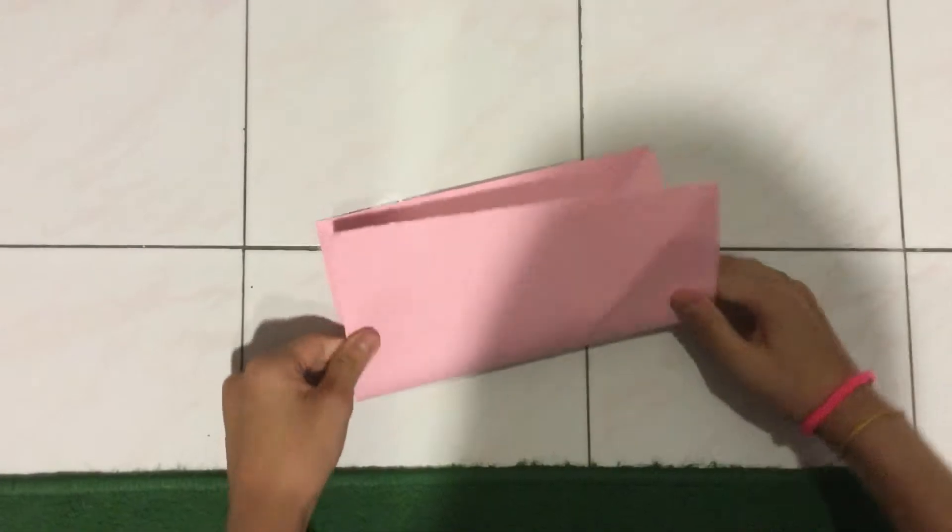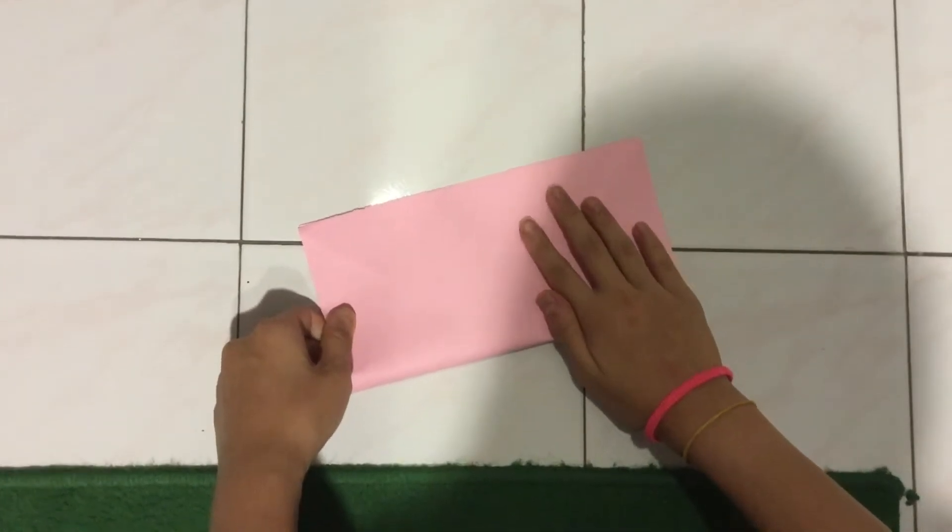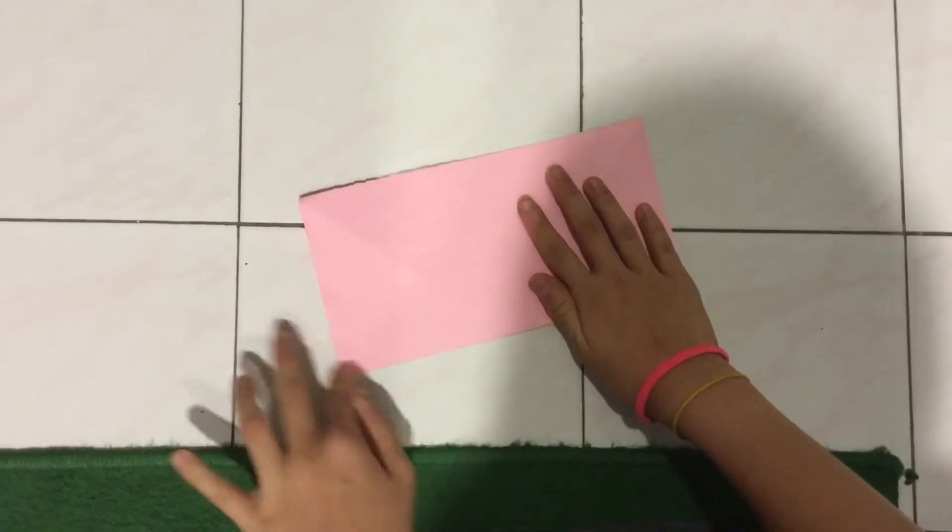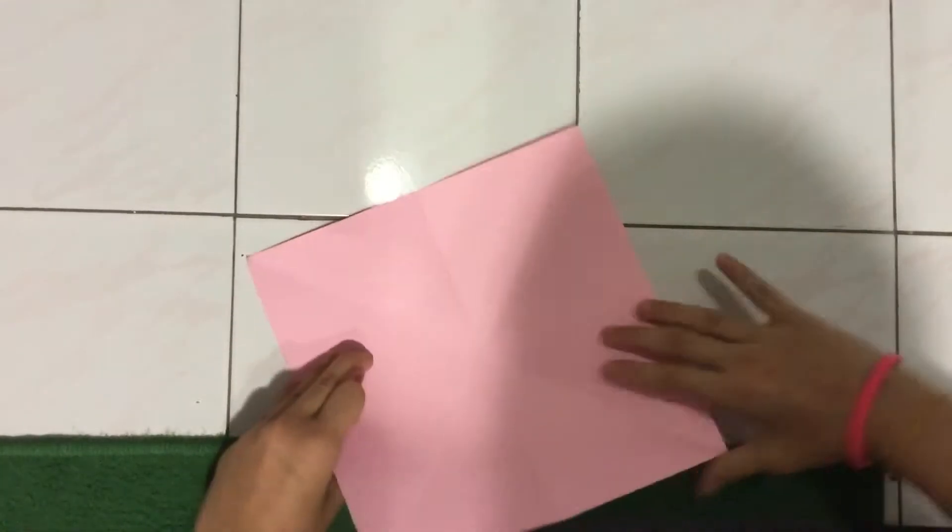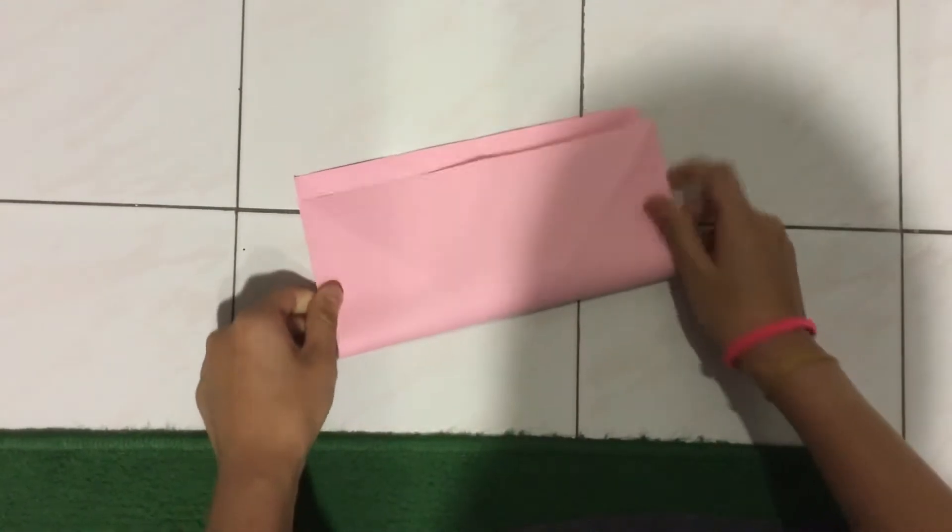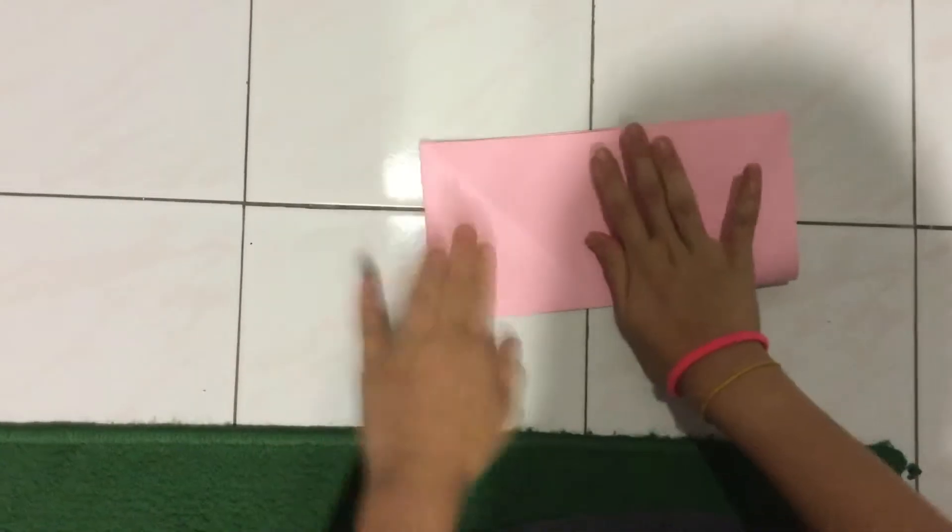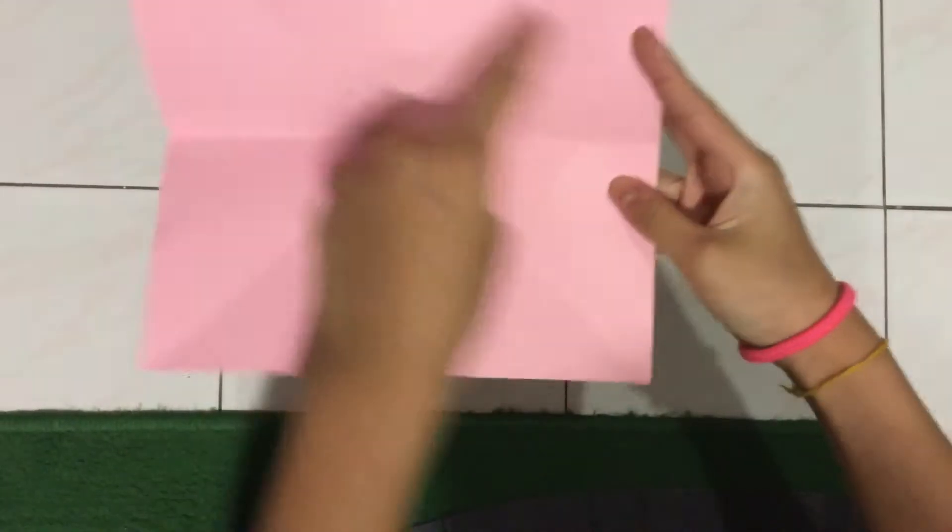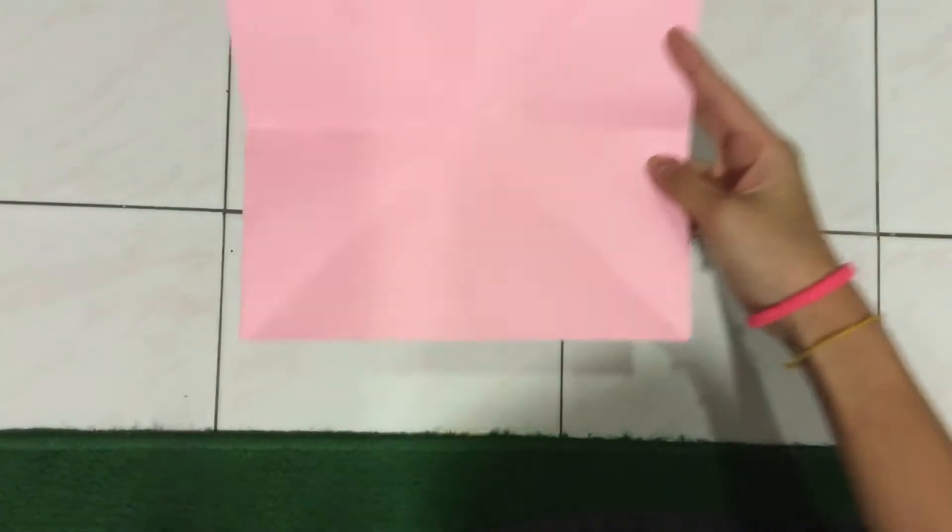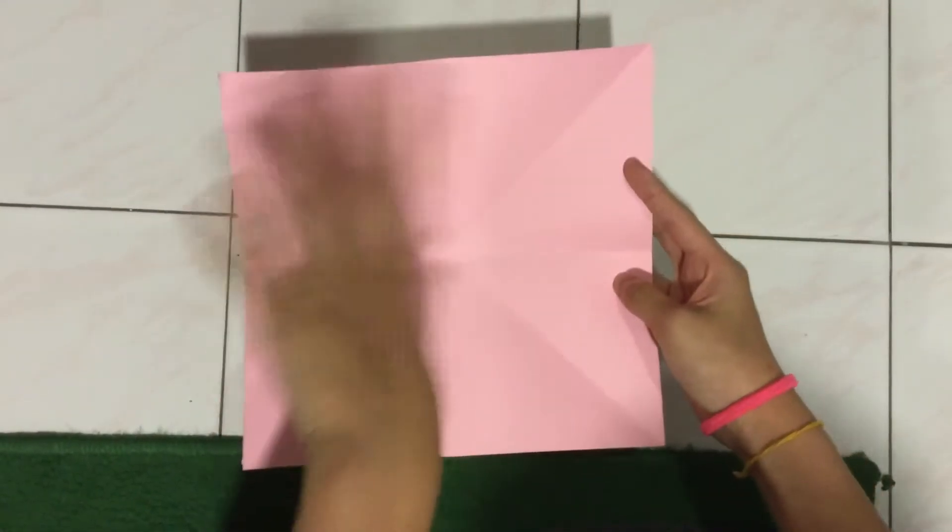Then you want to fold it like this to create a rectangle, and then you fold it the other way, so it's separated into one, two, three, four, five, six, seven, eight different pieces.